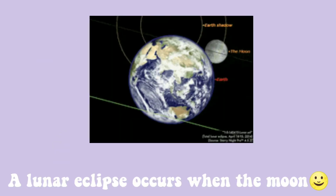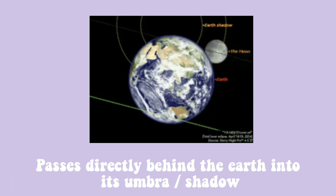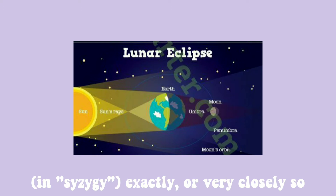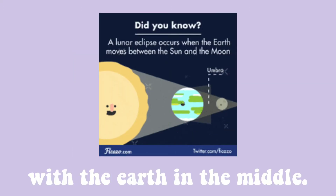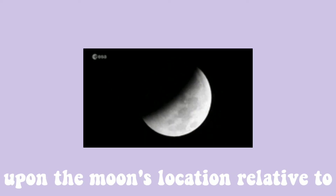A lunar eclipse occurs when the moon passes directly behind the earth into its umbra or shadow. This can occur only when the sun, earth, and moon are aligned exactly or very closely so, with the earth in the middle. The type and length of an eclipse depends upon the moon's location relative to its orbital nodes.